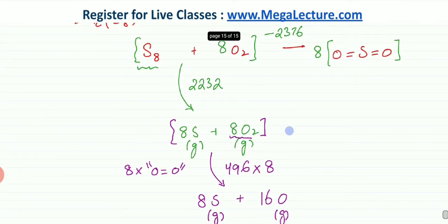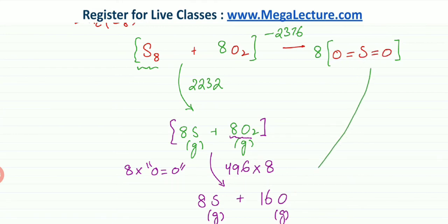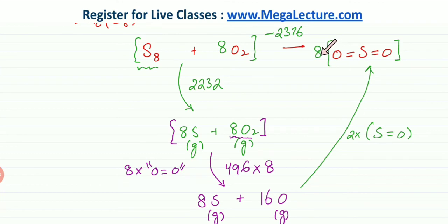We are slowly creating the full alternative path. The final step is to take all the gaseous atoms and form the SO₂ molecules. To make one SO₂ molecule, we form two S=O double bonds. Since we need 8 SO₂ molecules, we multiply by 8, meaning we are forming 16 S=O bonds in total.